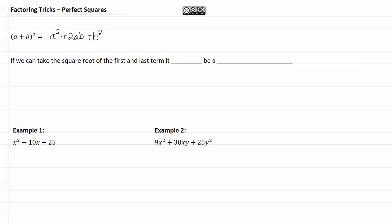If we can recognize this form, we can use it to factor back to this form. We look for that by seeing if we can take the square root of the first and last term and it could be a perfect square.